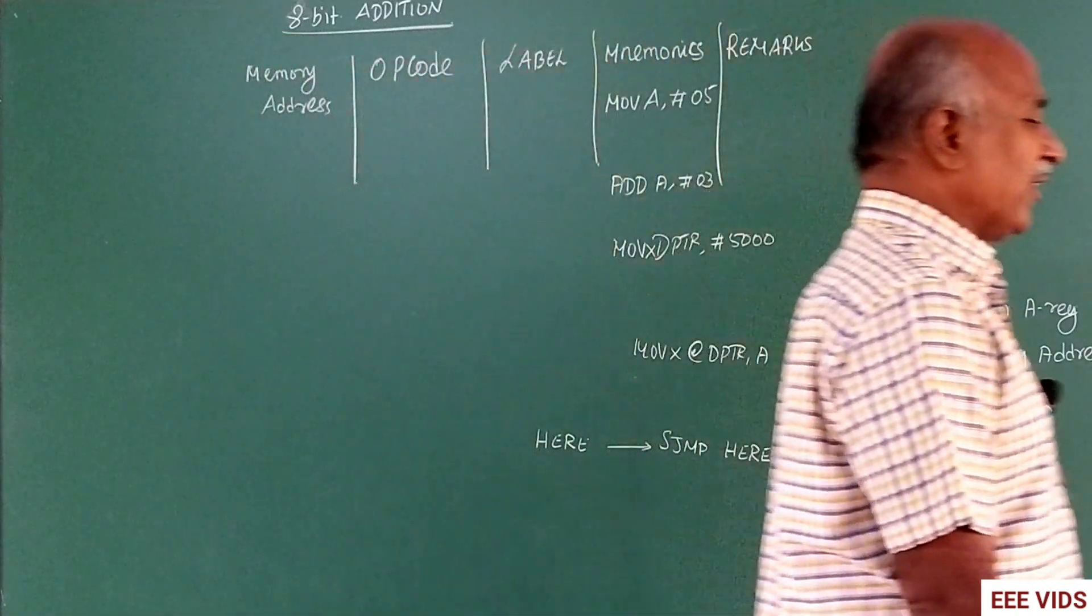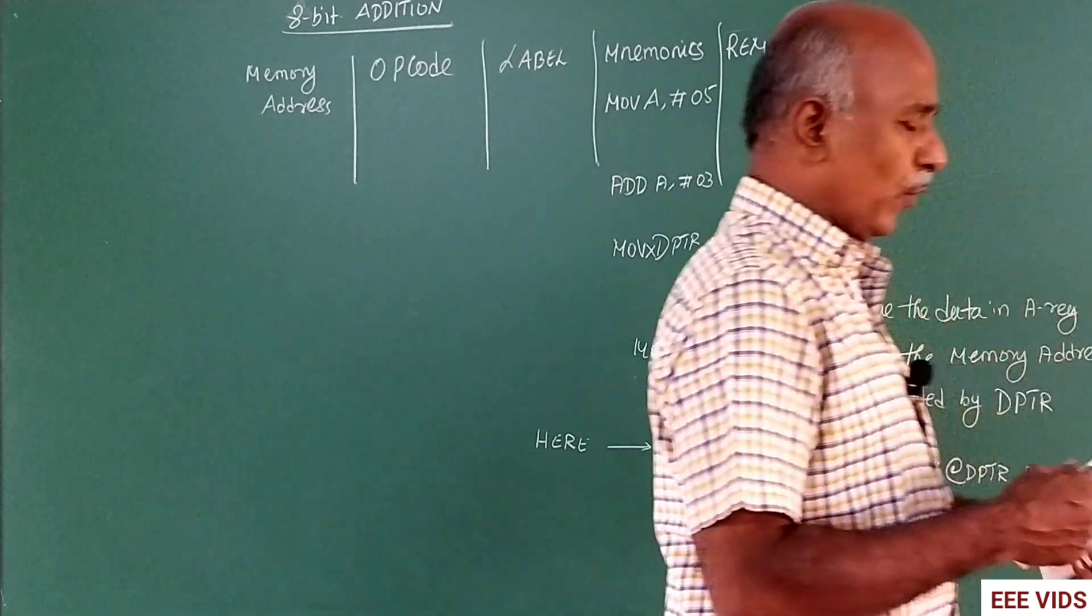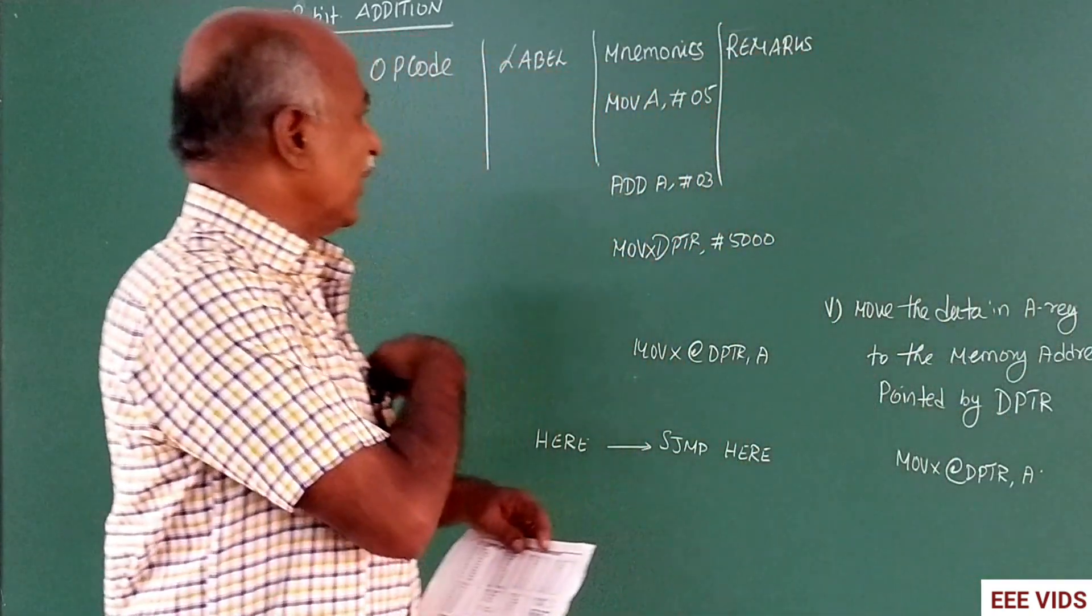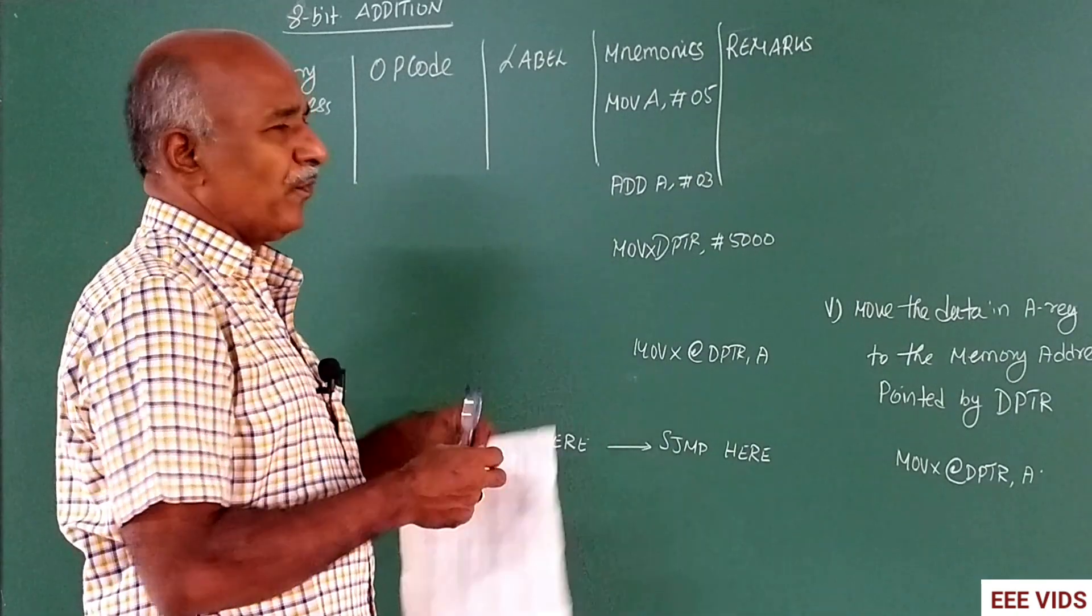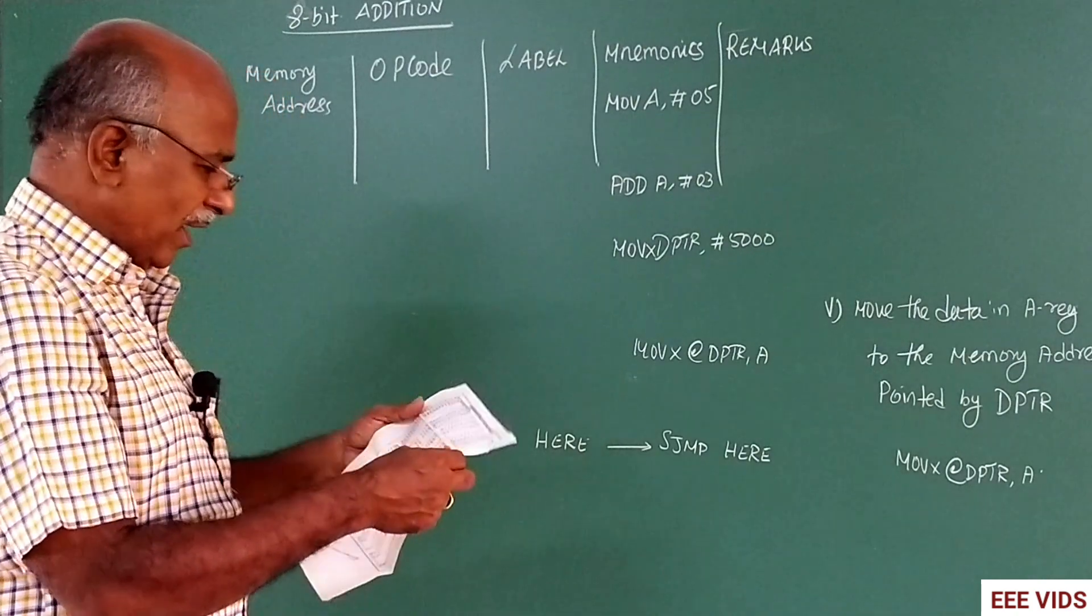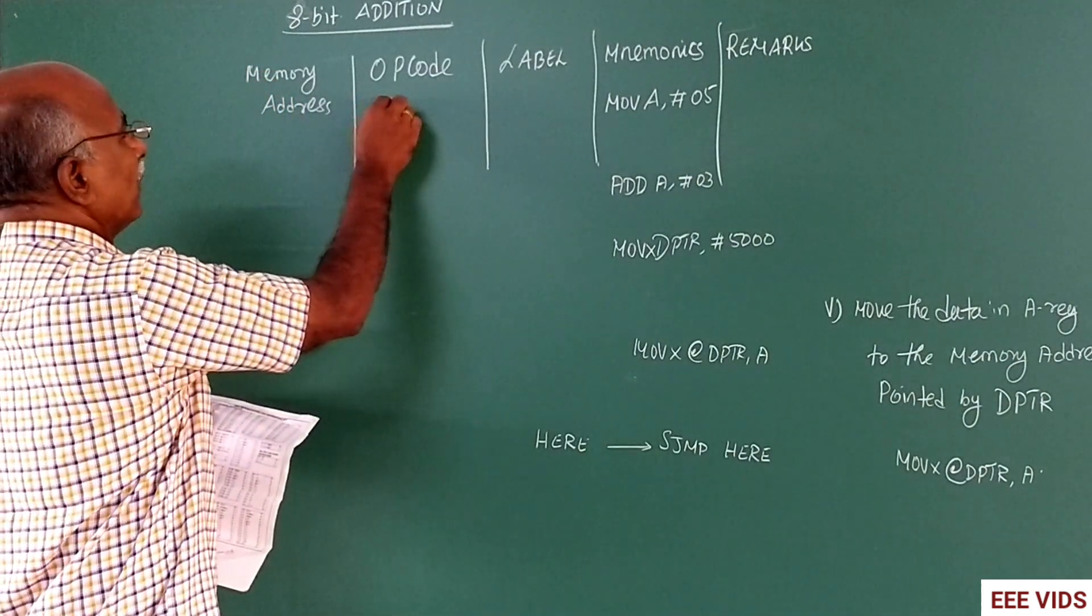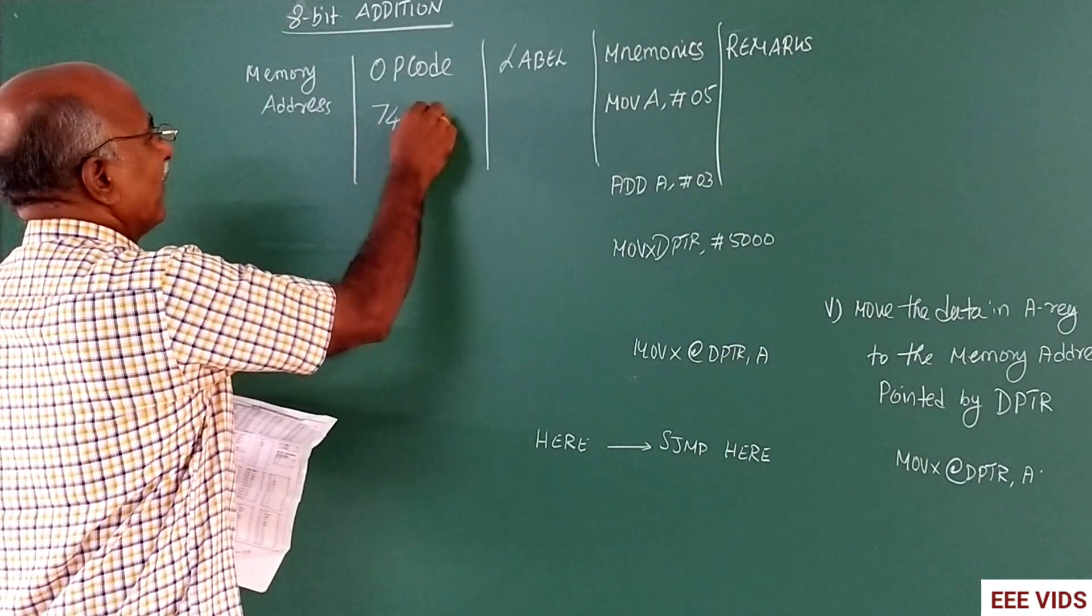Now let's go to the mnemonics. Let's go to the opcode. For example, MOV A,05. This instruction is MOV A, immediate. Here, opcode is 74. 74,05. So 74 is opcode, data is 05.